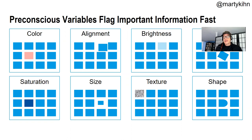There are two ways we process information in our brain that tie directly to this story about visualization. One is the fast way — what we call preconscious variables. These are things that our brain, our eyes, our visual system notice very quickly, even before we pay attention. Things like color — if you see the pink one, we can see that pretty quickly. Alignment, brightness, size, if something's a little out of skew, saturation, shape — these are cues we pick up very rapidly and naturally without even trying.